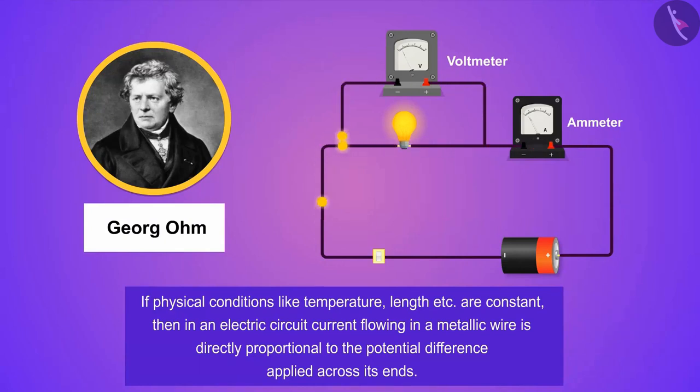So the question arises, in what ratio does electric current increase and decrease? Ohm named this ratio as resistance.